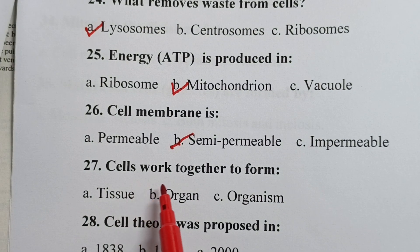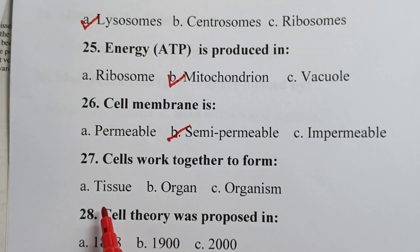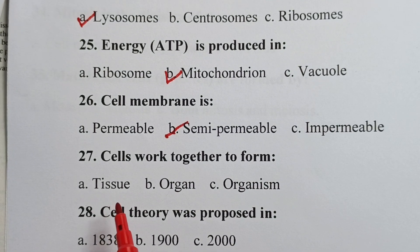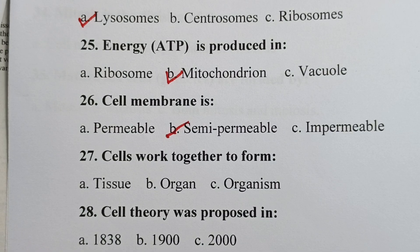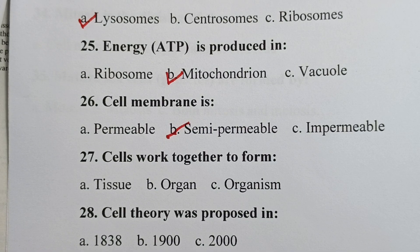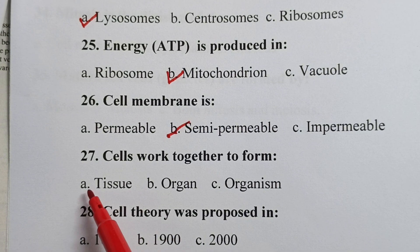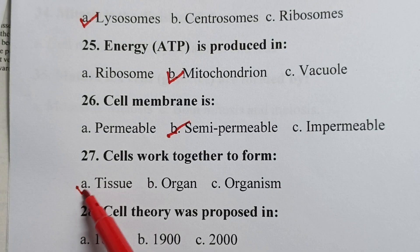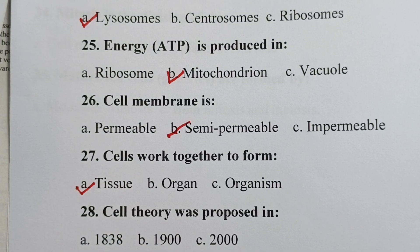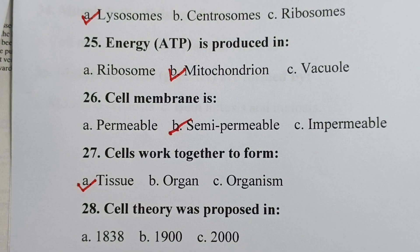Question twenty-seven: cells work together to form — is it tissue? Your correct answer is tissue. So, cells work together to form tissues.